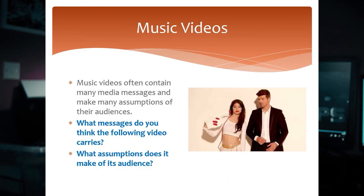Watch the music video for Robin Thicke's Blurred Lines. This is a somewhat controversial video and there are two different versions — this is the more acceptable of the two. As you watch I want you to try and identify what you think the video and the song is saying about gender. What does it assume men are? How does it portray them? And what does it seem to think of women and how does it portray them? What messages and values do you think this particular media product carries? What does it say to the viewer?